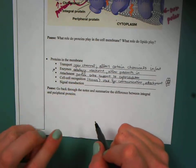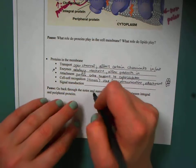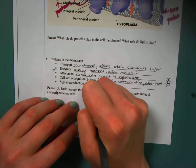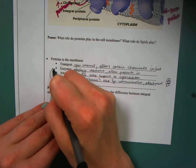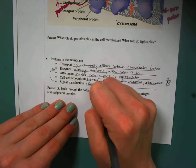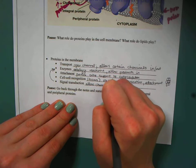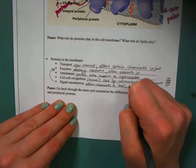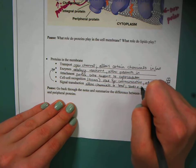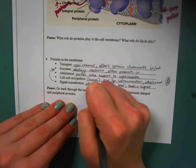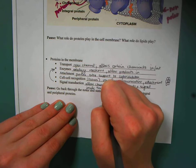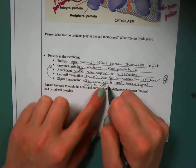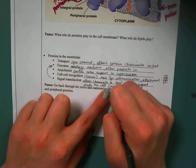Finally, we have signal transduction. So these actually allow sort of like an enzyme. They allow chemicals to bond, and then that sends a signal inside the cell. And that signal is usually related to maintaining homeostasis.